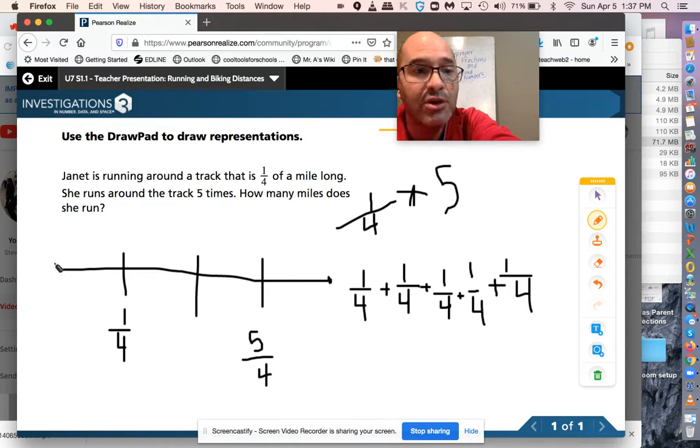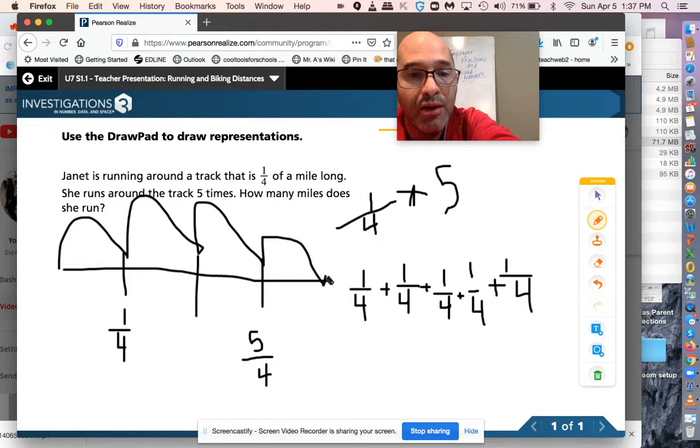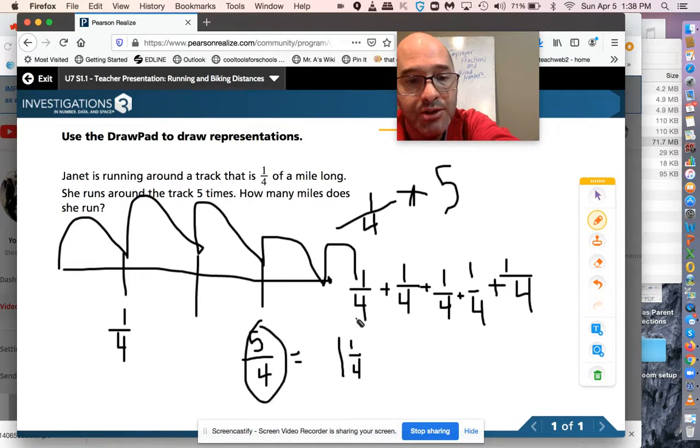And that makes sense also here on my number line. We had one-fourth for once, two-fourths for twice, three-fourths, four-fourths is one whole mile. Plus another fourth would be five-fourths. One-fourth five times would be five-fourths. And we know that four-fourths is one whole. So five-fourths would be one whole plus that one extra fourth. From the ten-minute math, we were making improper fractions into mixed numbers. Five-fourths is the same as one and one-fourth.